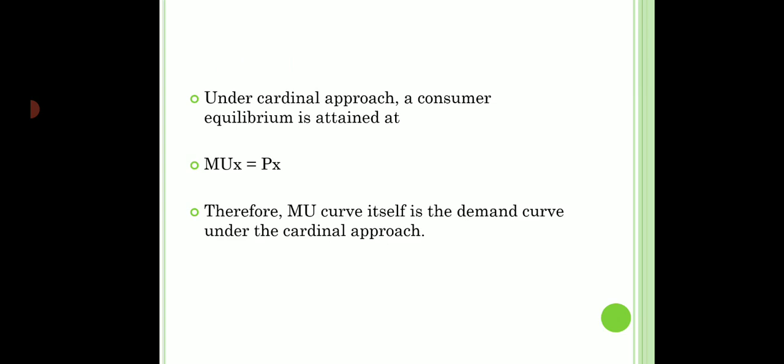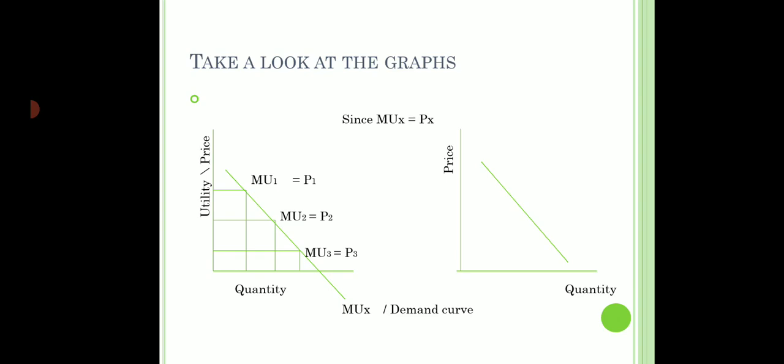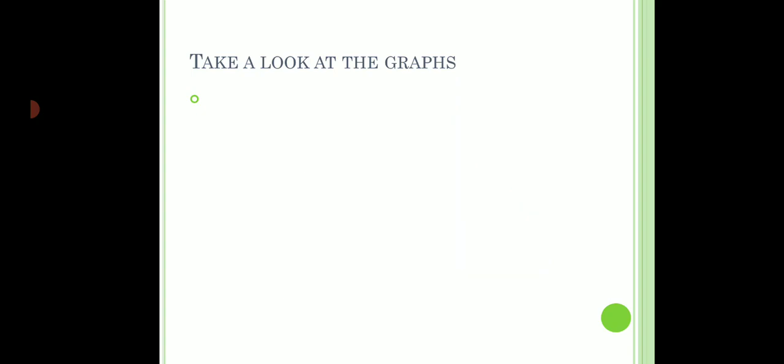Under the cardinal approach, equilibrium is attained at MU_X equals P_X. So in simple words, the marginal utility curve itself is the demand curve. Let's see how that works. On graph A I have drawn the marginal utility curve, and on graph B we have the demand curve. On the Y-axis we have utility and on the X-axis we have quantity, and the marginal utility curve is a downward sloping curve.